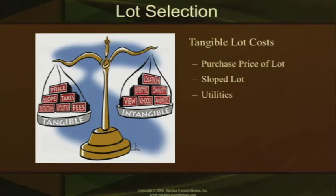Utilities — whether it has septic or sewer, whether it has underground or overhead — all of those are different prices relative to each separate lot. Those are parts that would be tangible costs associated with the lot.